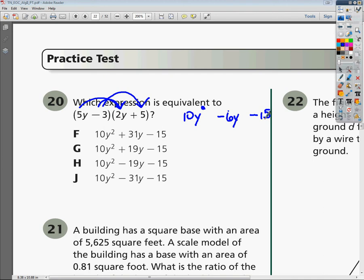Now, we're going to multiply 5y and positive 5, which will give us positive 25y.